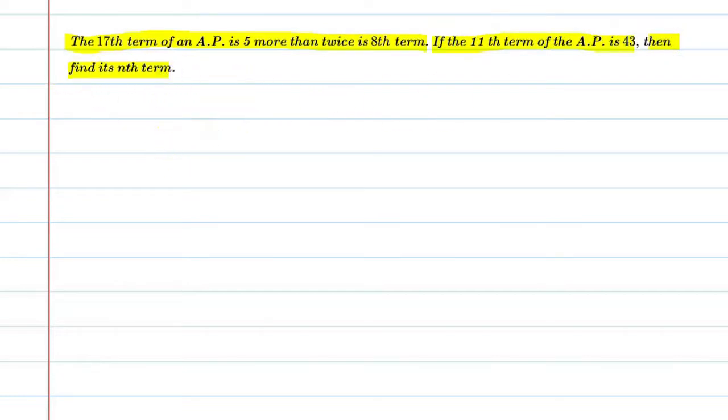Let's start this question. Here we can say the general term of an AP, that is AN, is equal to A plus n minus 1 into D.